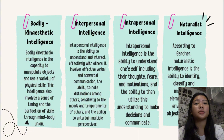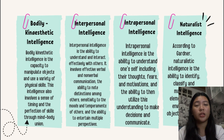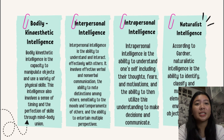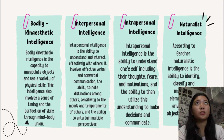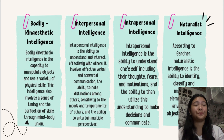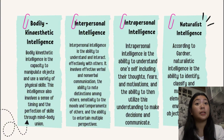Next is interpersonal intelligence — the ability to understand and interact effectively with others. It involves effective verbal and non-verbal communication, the ability to note distinctions among others, sensitivity to the moods and temperaments of others, and the ability to entertain multiple perspectives. People with this intelligence tend to be observant — they can sense changes in the mood of those around them and feel the energy in their environment.